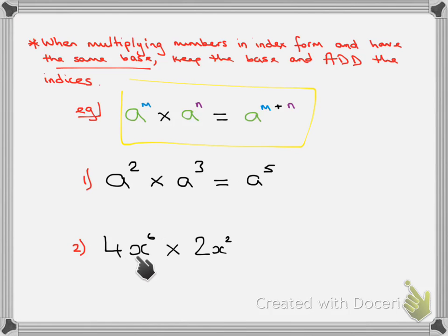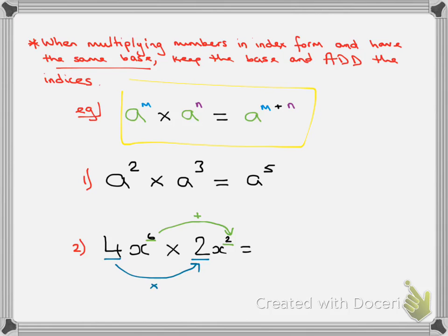A harder example: 4x to the power of 6 times 2x to the power of 2. First we multiply the coefficients — 4 times 2 gives us 8. Then we add the powers: 6 plus 2 gives us 8. The x stays the same. So the 8 out front comes from 4 times 2, x stays unchanged, and the power of 8 comes from 6 plus 2 adding our powers. That's our first law.